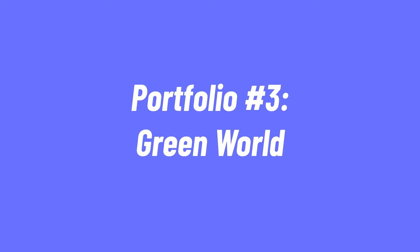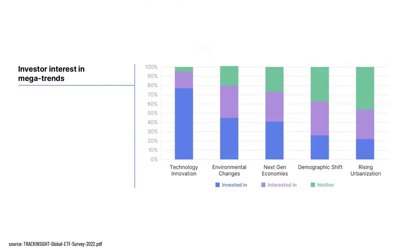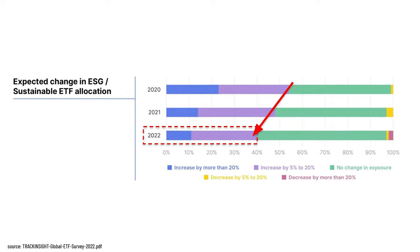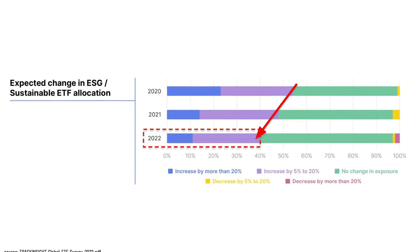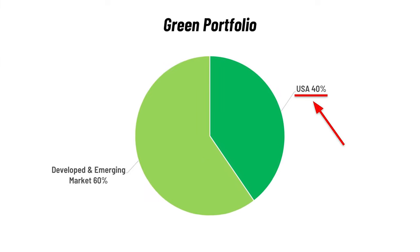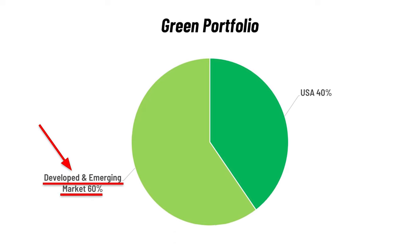Next up is the green portfolio. ESG investing is on the rise — it's one of the mega trends investors are interested in, the second most popular investment theme right behind tech. Around 40% of investors are looking to increase their ESG exposure by at least 5%. You can actually build an ESG portfolio with only two ETFs: one that invests in US ESG stocks and another that invests in international ESG stocks.